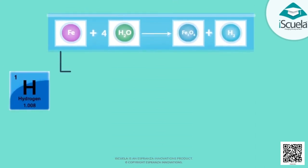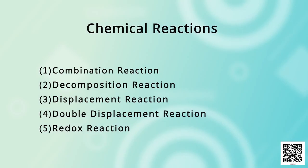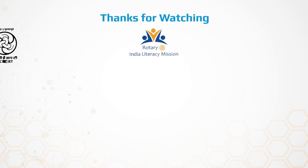After learning about balanced chemical equations, we will now learn about different types of chemical reactions: first, combination reaction; second, decomposition reaction; third, displacement reaction; fourth, double displacement reaction; and fifth, redox reaction. This completes today's topic — the rest of the chapter will continue in the next part. Stay safe and stay healthy, thank you!